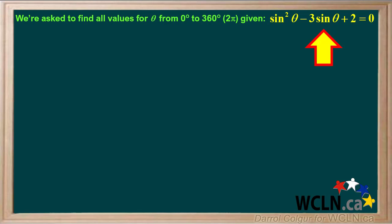We're asked to find all the values for the angle theta from 0 degrees to 360 degrees, or 2 pi radians, given this equation: sine theta squared minus 3 sine theta plus 2 equals 0.